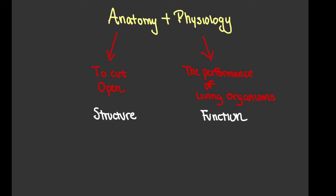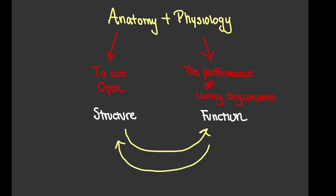One can't say they have a great understanding of anatomy just by knowing structure alone — it's helpful to know something about function with structure. In the same way, one can't fully understand how something functions without also knowing the way it's structured. So we have to take both terms together to understand how the human body works, which is why we take courses called anatomy and physiology. Now let's talk about the different subdivisions of these two terms.